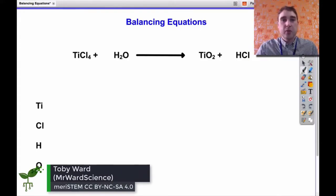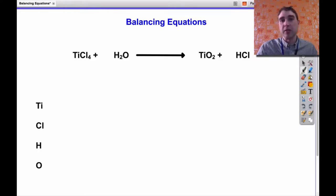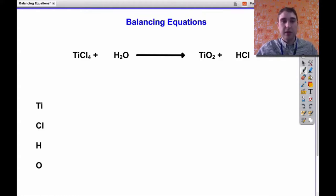This time we're going to do it without using the shopping bag analogy. We're going to do it in our head — we're still going to write down our numbers of atoms, but in a slightly different way, so we're not going to use fruit or shopping bags. This is our equation here: titanium chloride reacting with water to produce titanium dioxide and hydrochloric acid.